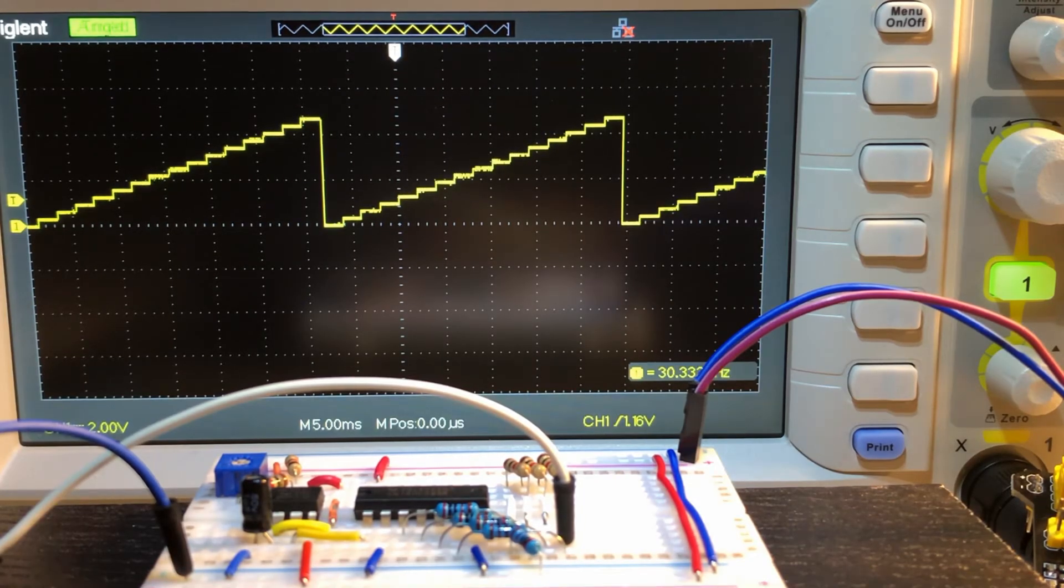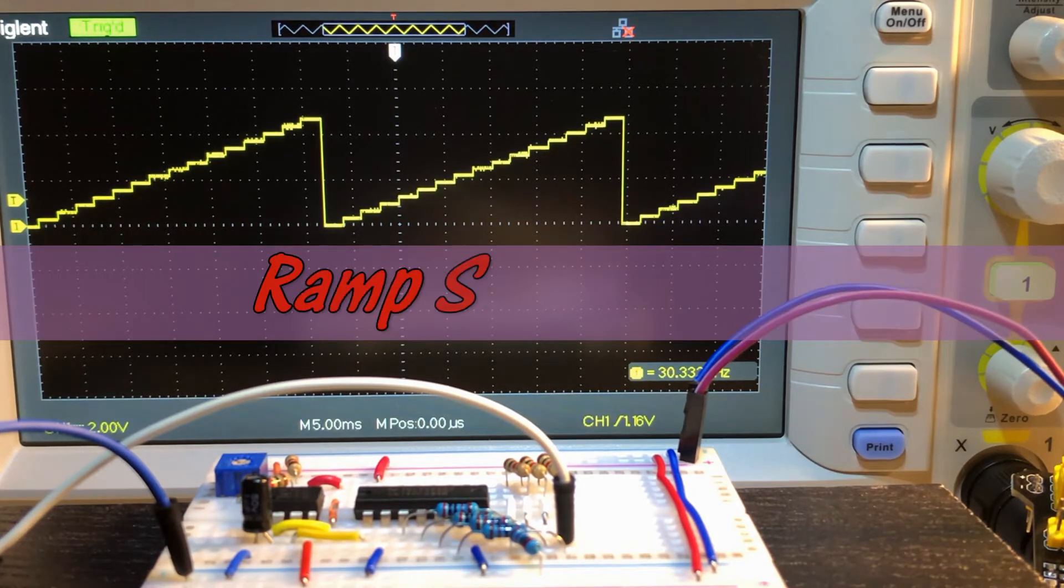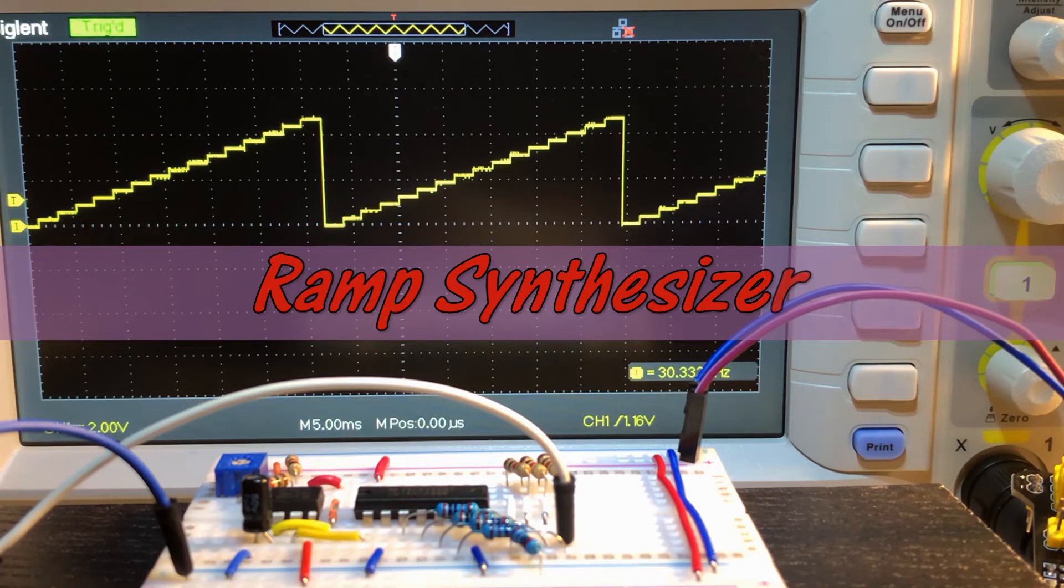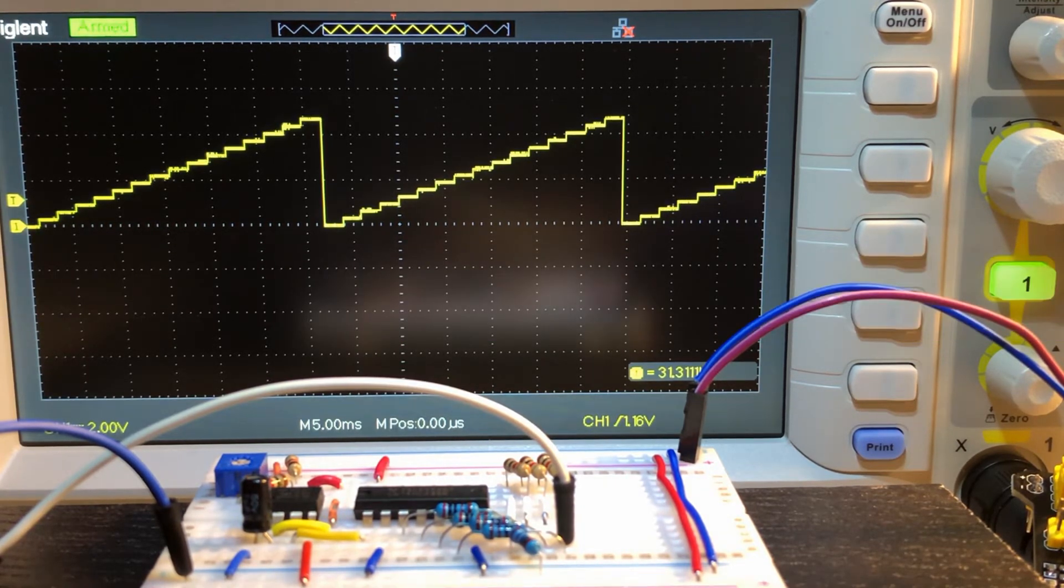This video demonstrates another circuit by Forrest MIMS, namely the RAMP synthesizer. The RAMP synthesizer generates a periodic RAMP waveform using a 4-bit counter circuit.